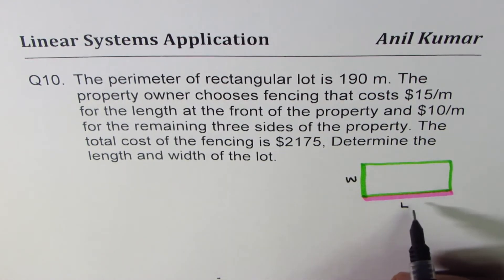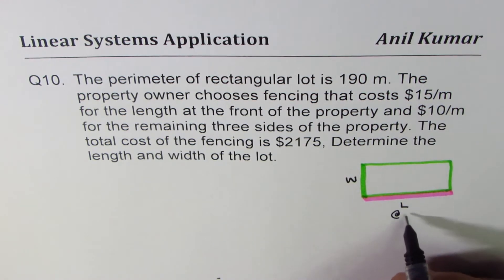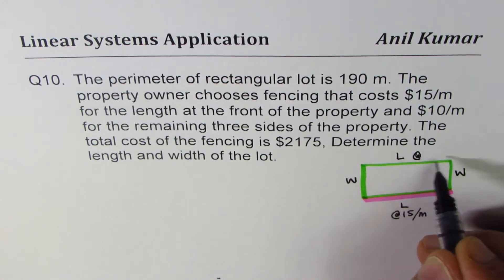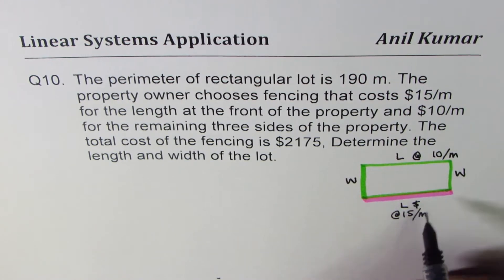Now cost of this front side is at the rate of $15 per meter, right? This is $15 per meter. And the others is at the rate of $10 per meter. The values are in dollars, of course.